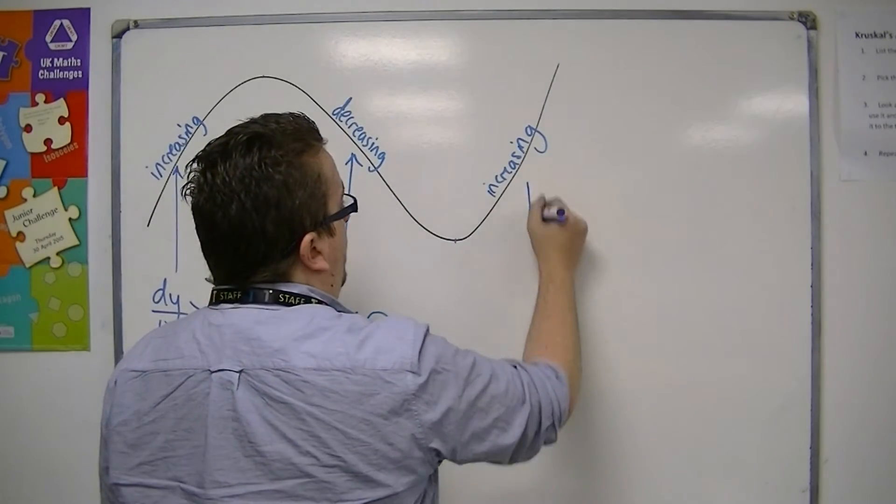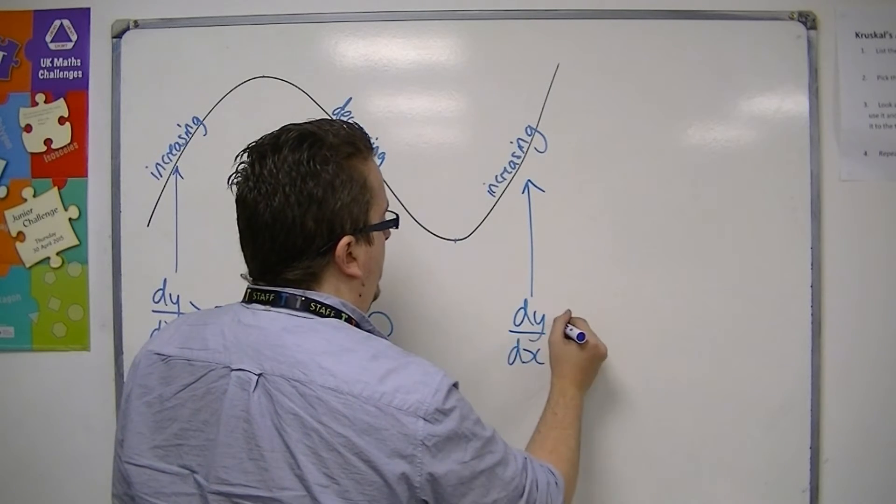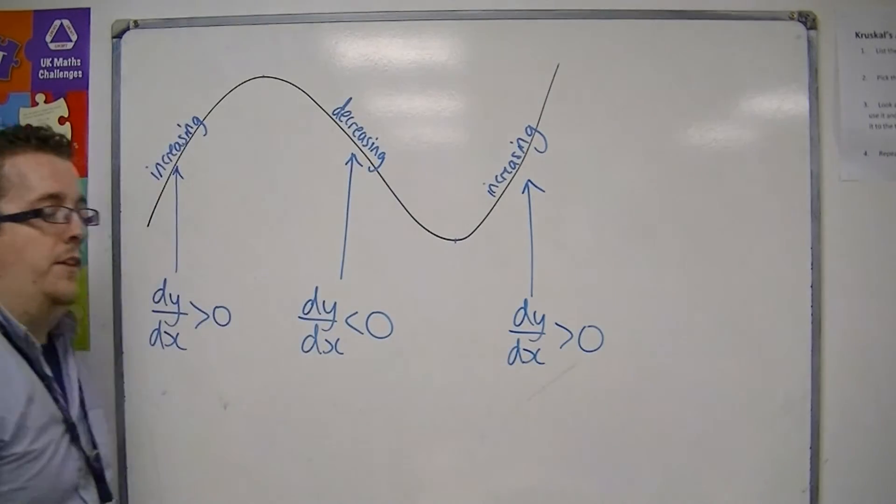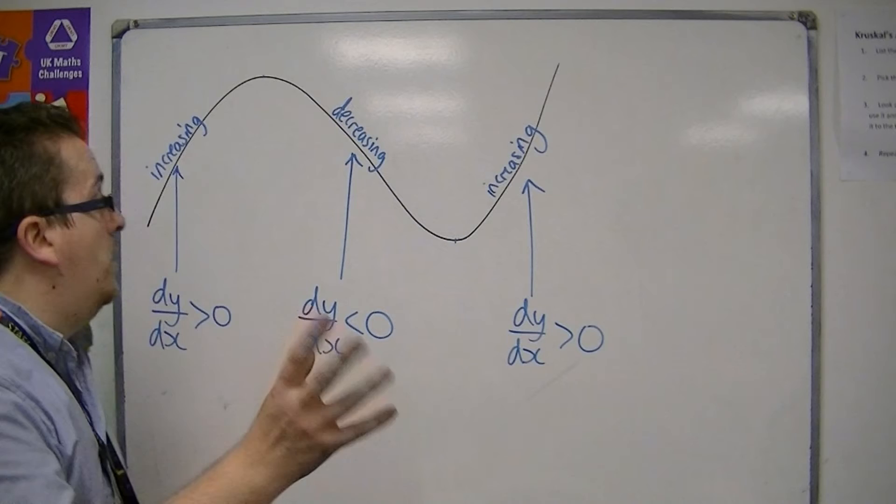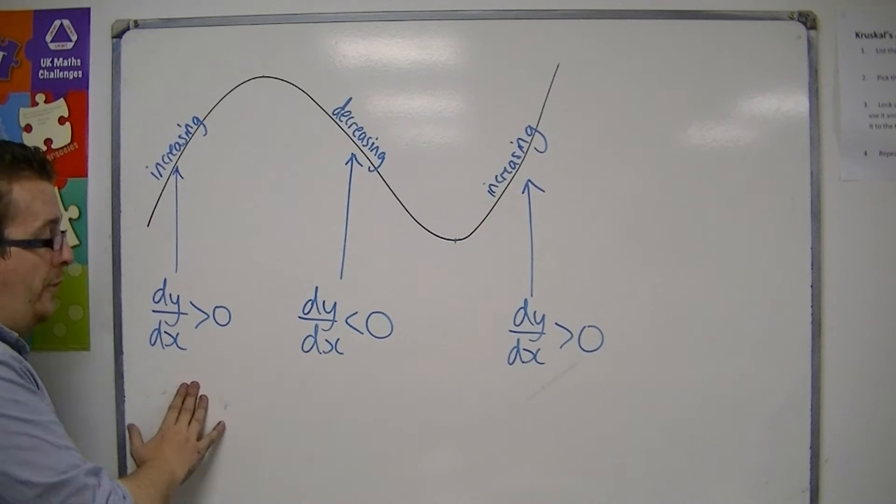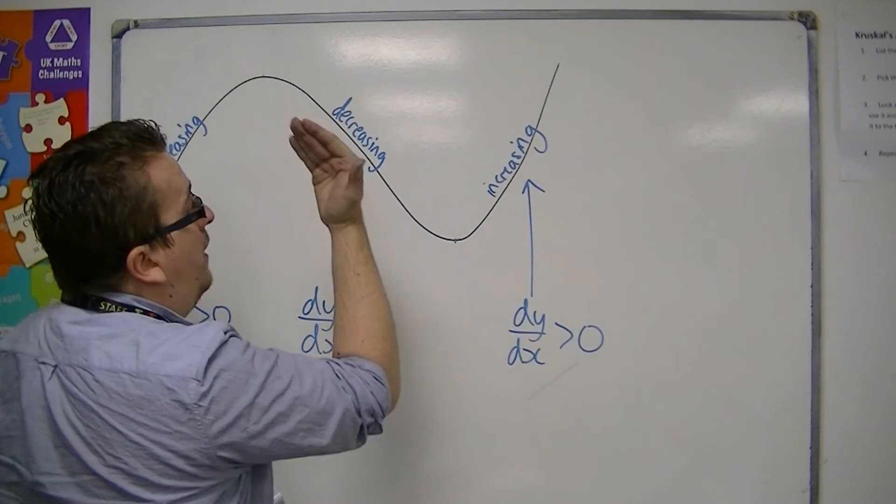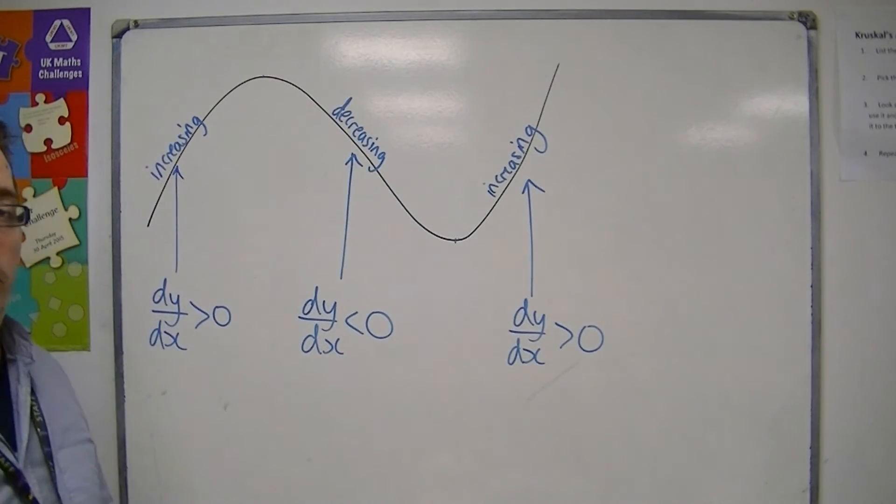And on this curve, we've got it increasing again. So dy by dx is larger than zero. So this means that when I substitute a point in, I get a negative value or a positive value. If it is positive, I know that the curve is increasing at that point. If it is negative, I know the curve is decreasing at that point.